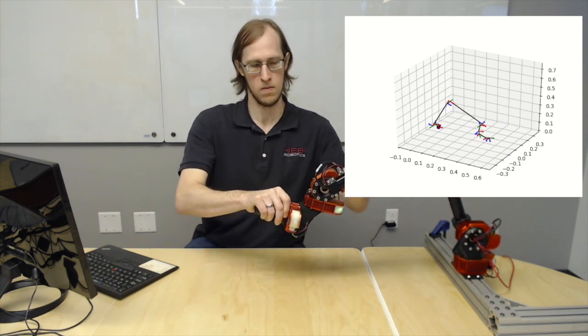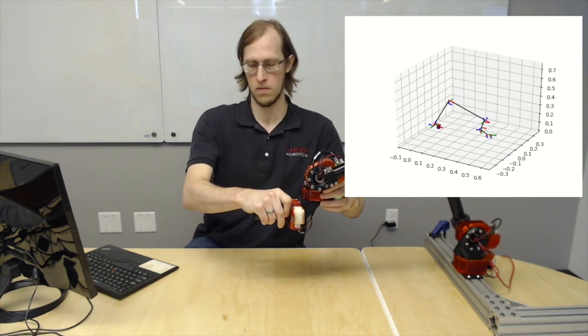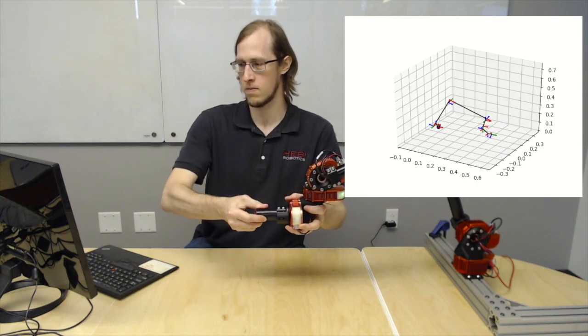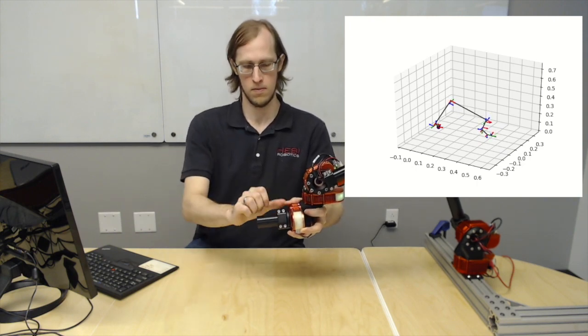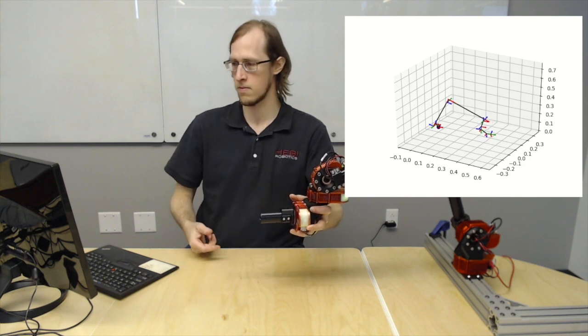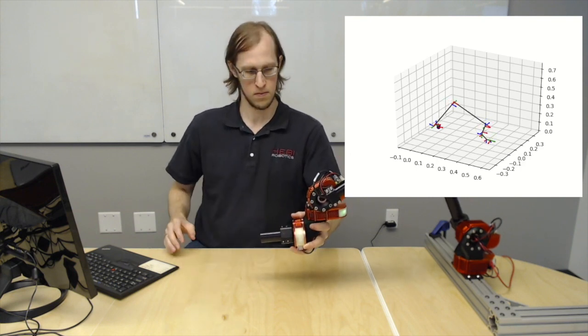Now, note that to further verify this, you could trace known shapes in the world and verify the computed tip position follows this correct shape. So this would allow you to very carefully determine the accuracy of the tip of your arm.